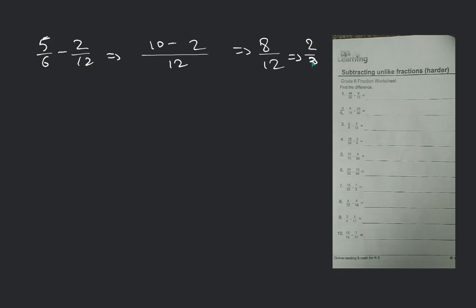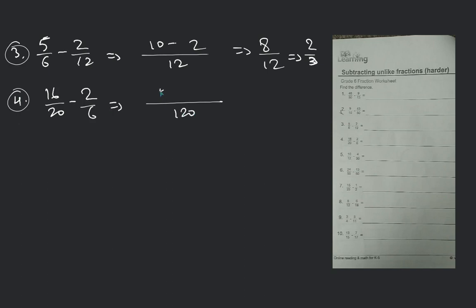Should I jump to the next question, fourth one? Number 4: 16 by 20 minus 2 by 6. We do the LCM — 6 into 20 = 120. Minus 16 into 6 = 96, minus 2 into 20 = 40. That will be 56 by 120. Divide by common multiple 8: 7 into 56 and 8 into 15. 7 by 15 will be your final answer.